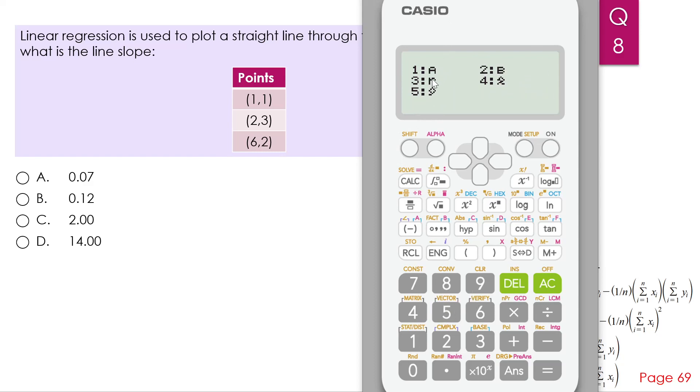And for us, the A is the Y-intercept. The B is your slope. So we need the slope. So you press number two, equal to 0.07, which is A.